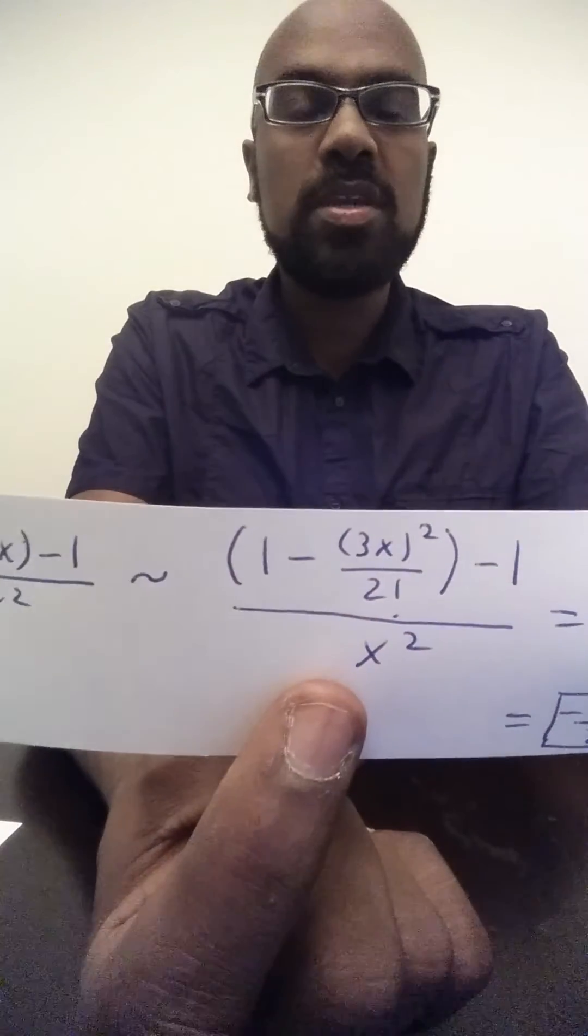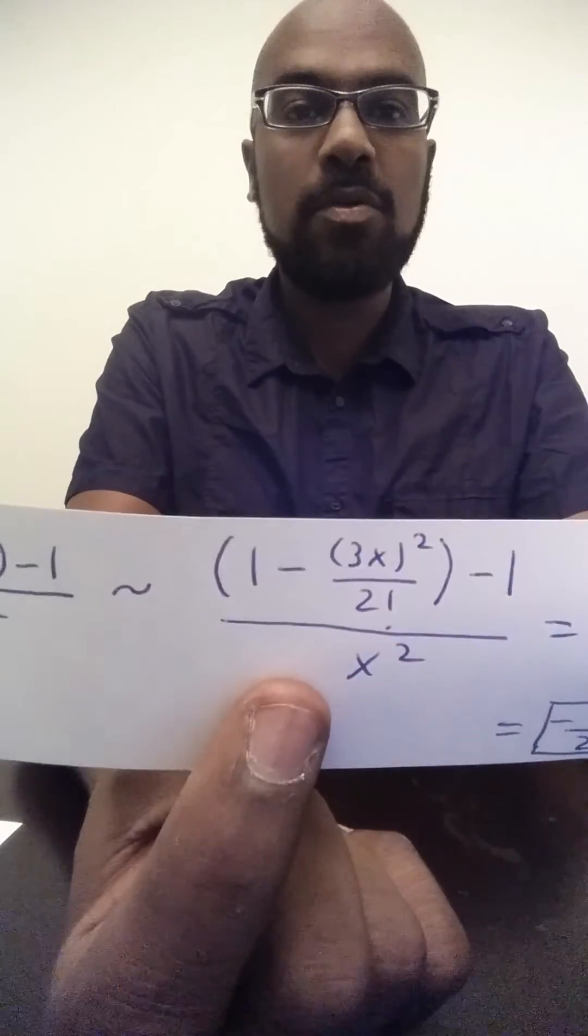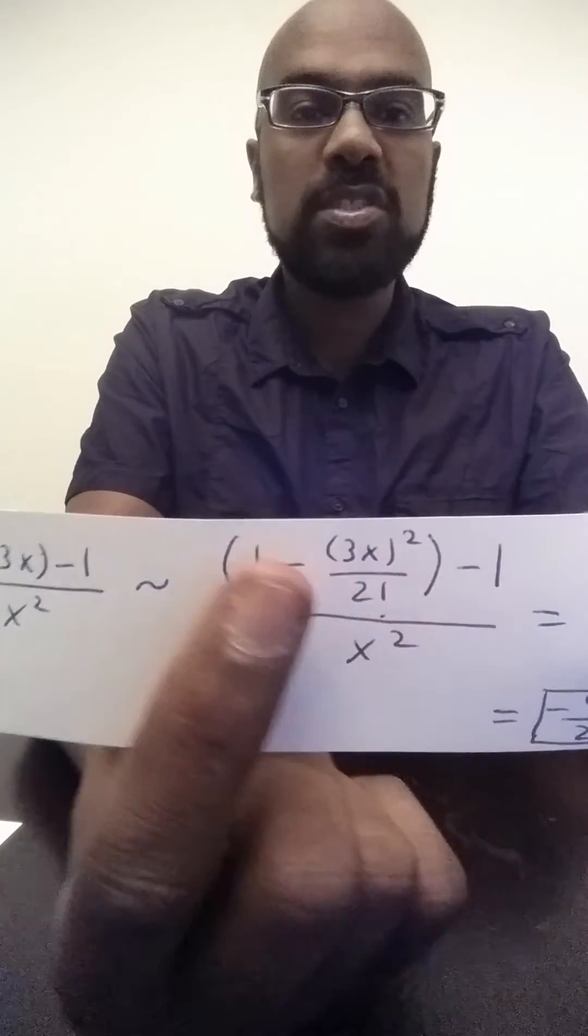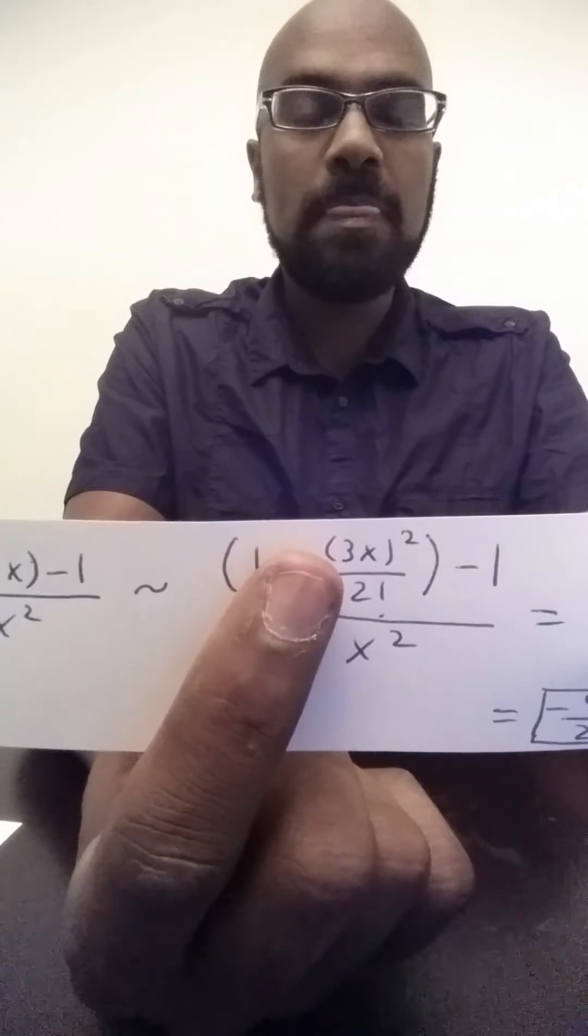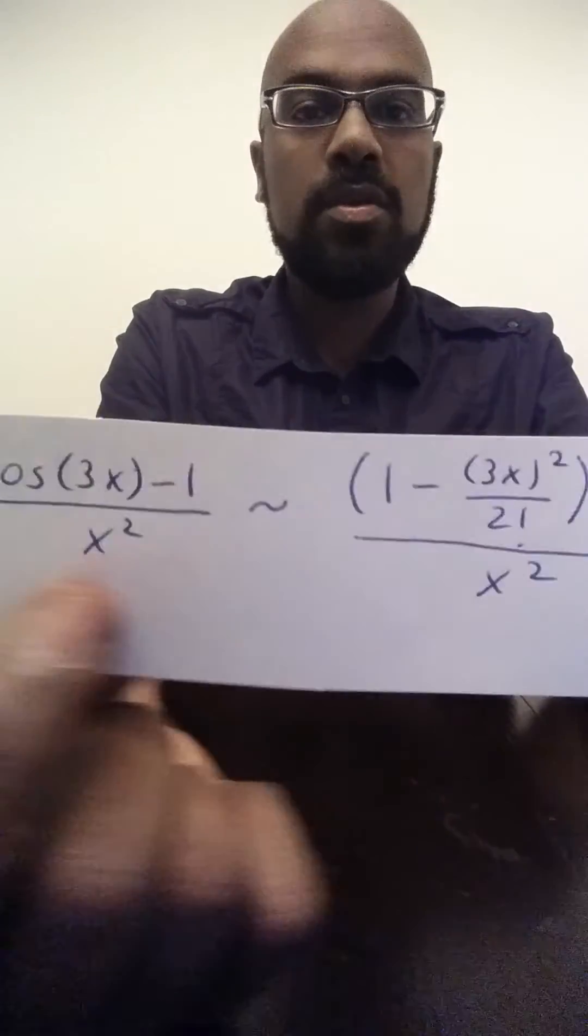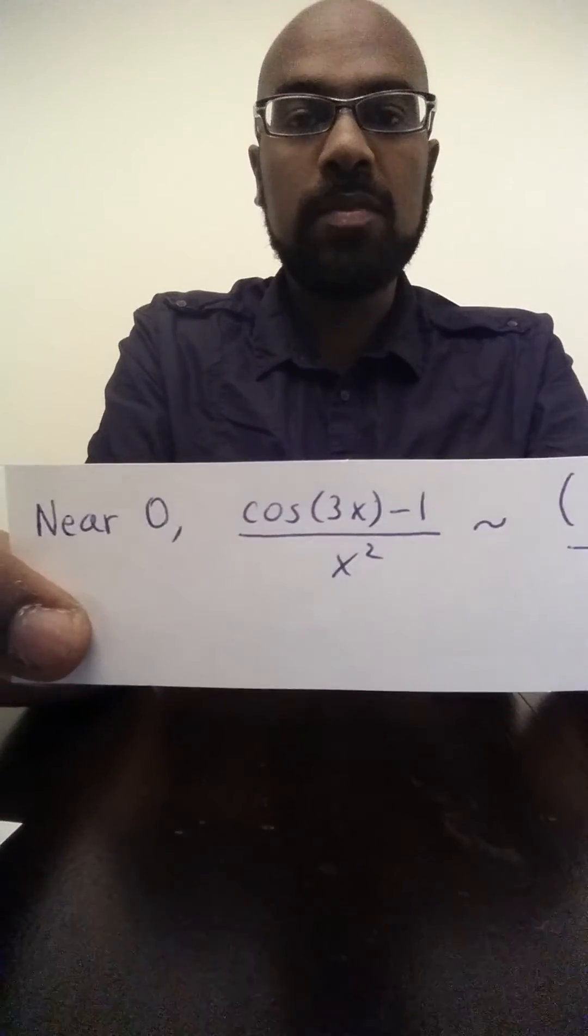So if you had something like a cubic term here, or a fourth power of x in the denominator, you might want to go further out in the power series, because the approximation you have with the numerator and denominator won't work in the limit.